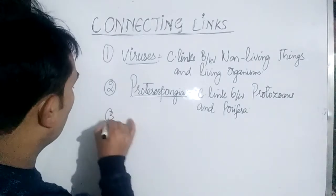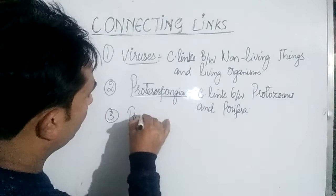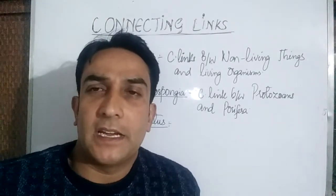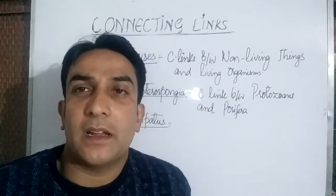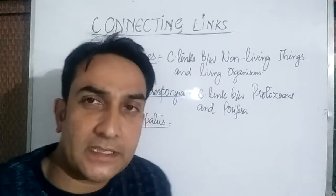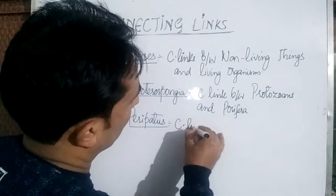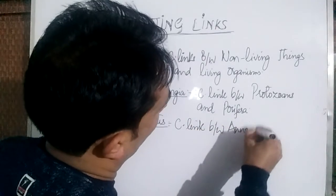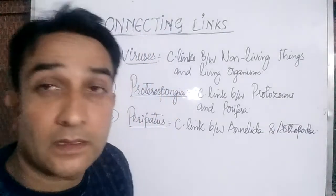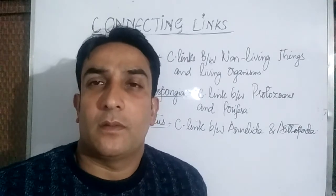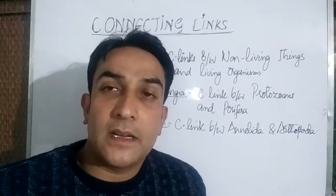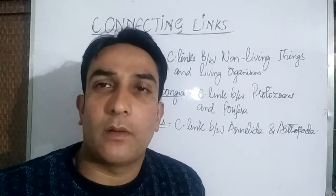The third connecting link we will discuss is Peripatus. Usually in your NEET examination, questions asked from connecting links mostly involve Peripatus. Peripatus is an organism which shows characters of both annelids as well as arthropods. So it is a connecting link between Annelida and Arthropoda. Peripatus shows some characters of annelids and some characters of arthropods, making a point that arthropods have evolved from annelids.